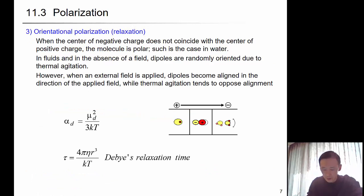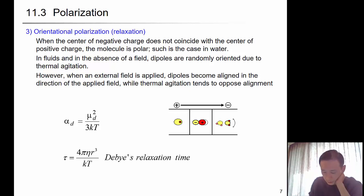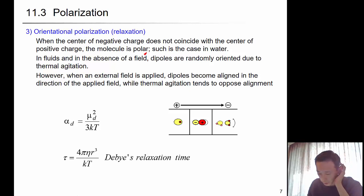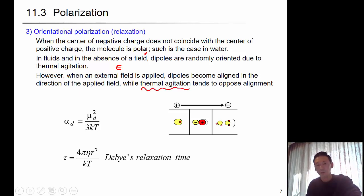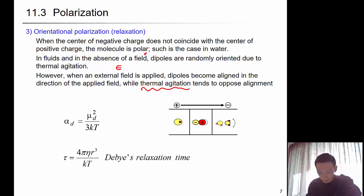Orientational polarization is relevant to our study because it occurs in the gigahertz region. When the center of negative charge does not coincide with the center of positive charge, the molecule is polar — such is the case for water. In the absence of a field, dipoles are randomly oriented due to thermal agitation. When the external field E is applied, dipoles become aligned parallel to the applied field, while thermal agitation tends to oppose alignment and increase entropy. These are relaxation phenomena, and the relaxation time depends on molecule size and temperature.